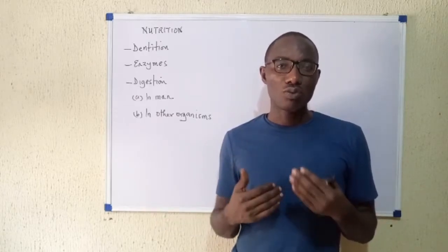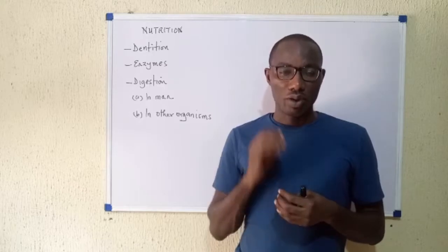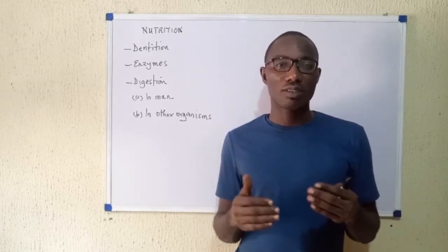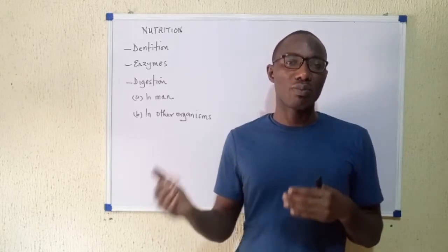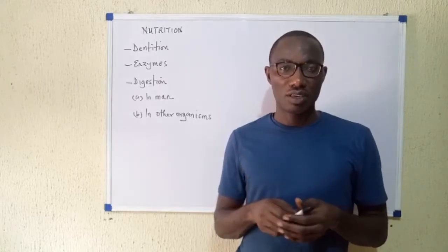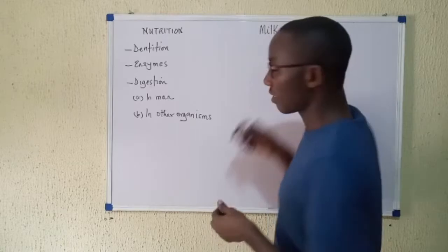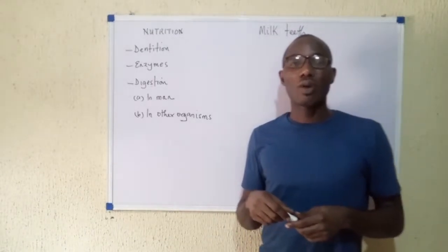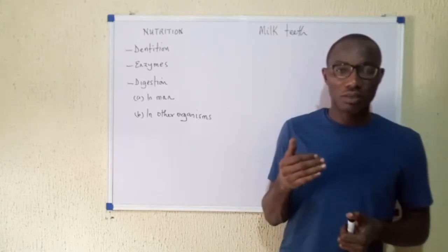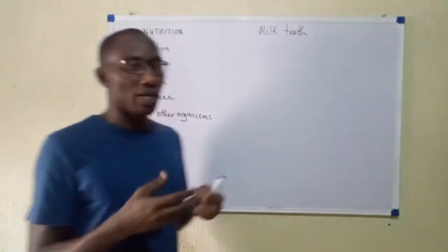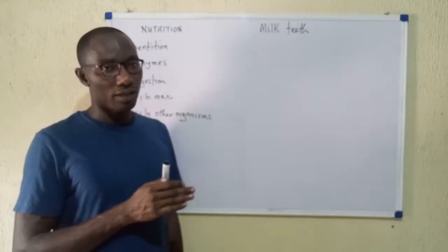In the case of humans, we lose our teeth and replace them just once during our lifetime. We are born without teeth, then develop a first set of about 20, which we shed over time only for them to be replaced by a new set. This first set is referred to as the milk teeth — also called deciduous teeth — and they are temporary. When they go, they are replaced by the permanent teeth, and if we lose our permanent teeth, we do not get them back.